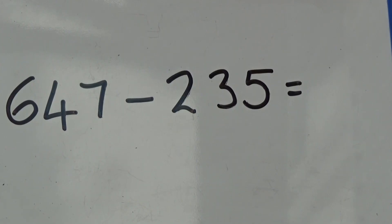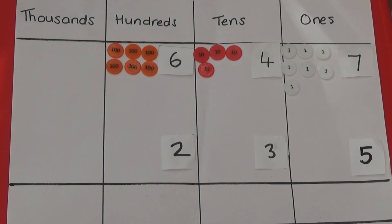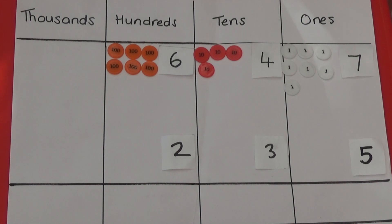First, I'm going to show you how to work out 647 minus 235. When we do column subtraction, we always subtract the ones first. I've made the number 647 using six hundred counters, four tens counters, and seven ones counters. And underneath I have put the number I'm subtracting, which is 235.